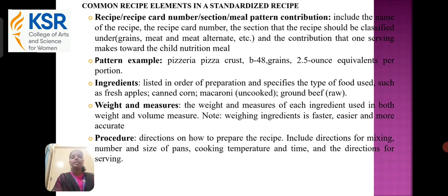Ingredients are listed in order of preparation and specify the type of food used, such as fresh apples, canned corn, macaroni, and ground beef. Weight and measures: the weight and measure of each ingredient should be recorded in both weight and volume measure. Weighing ingredients is faster, easier, and more accurate.